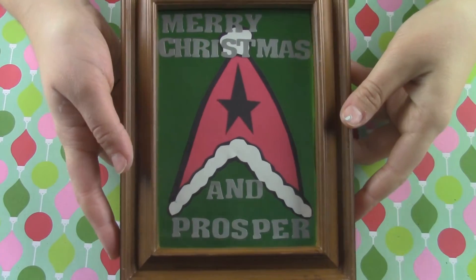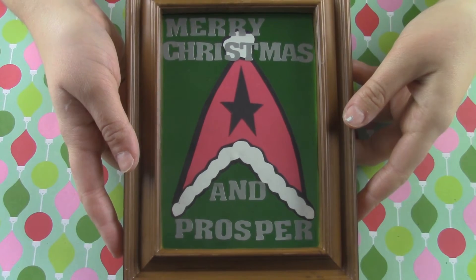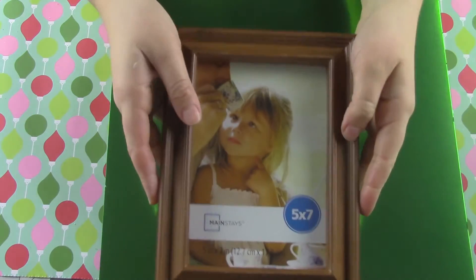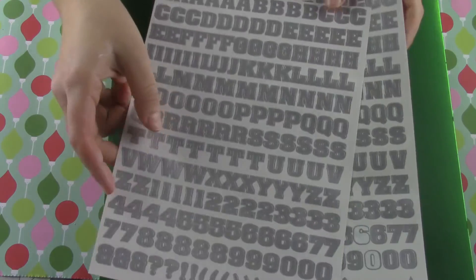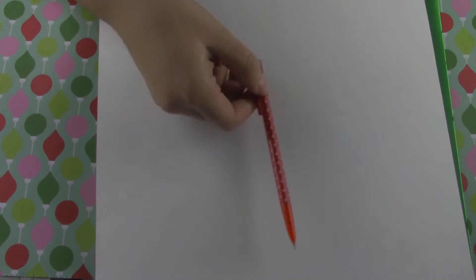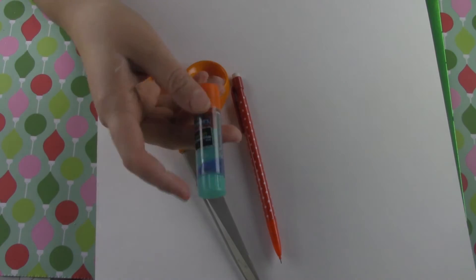My dad isn't much of a Christmas fan but I decided to make a Christmas geeky Star Trek picture to hang on the wall. For this, I'm going to use a piece of cardstock, a picture frame, some letter stickers, red, black, and white construction paper, a glue gun and glue stick, a pencil, a pair of scissors, and a glue stick.